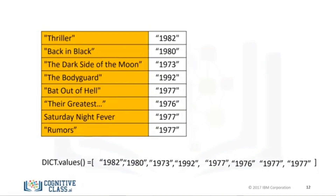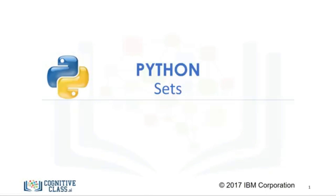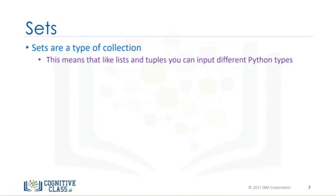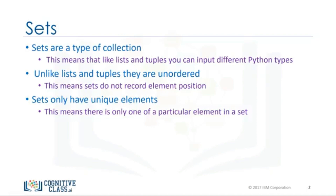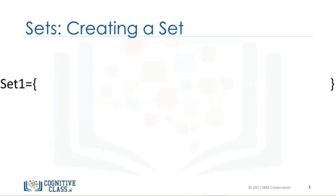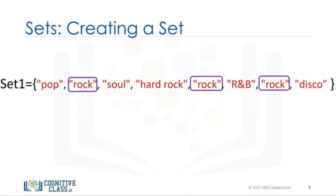Let's cover sets. They are also a type of collection. Sets are a type of collection. This means that like lists and tuples, you can input different Python types. Unlike lists and tuples, they are unordered. This means sets do not record element position. Sets only have unique elements — there is only one of a particular element in a set. To define a set, you use curly brackets. You place the elements of a set within the curly brackets. You notice there are duplicate items. When the actual set is created, duplicate items will not be present.